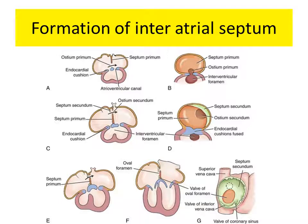Now parallelly, the primitive atrium is partitioned into right and the left half by the formation of the interatrial septum. AV cushions are formed, and from the roof of the primitive atrium, a partition starts growing downwards towards the AV cushion. We call this the septum primum. It grows downwards towards the AV cushion, leaving a small opening at the bottom which we call the ostium primum.